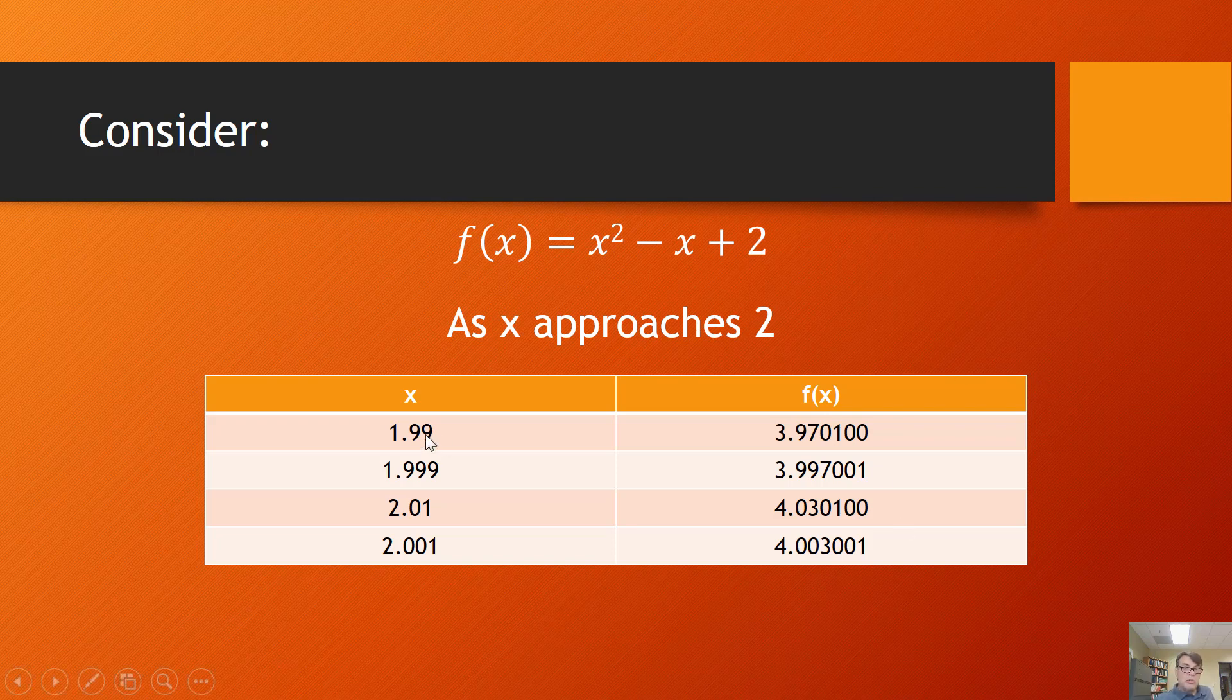You can see here we've done some plugging in. This graph is taken from Stewart's textbook. We can approach 2 from the left, or we can approach 2 from the right. We call those left-hand and right-hand limits. In the next video I'll talk more about that, but what you can see is exactly what we saw by plugging in the 2.